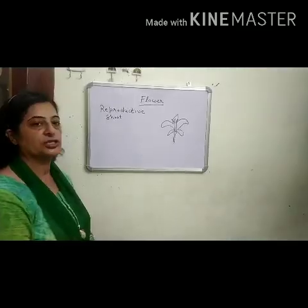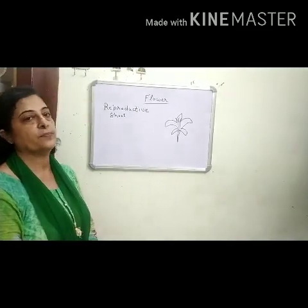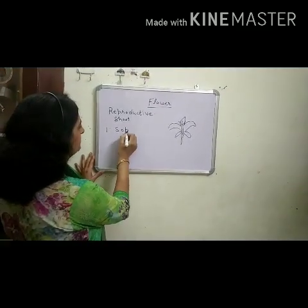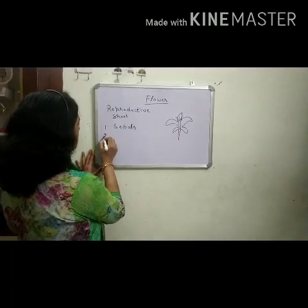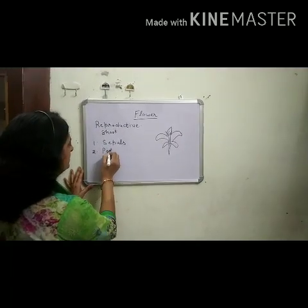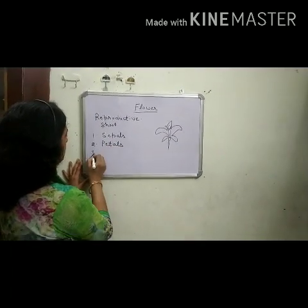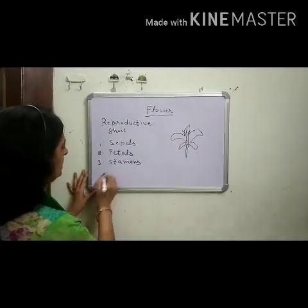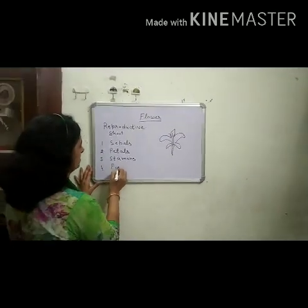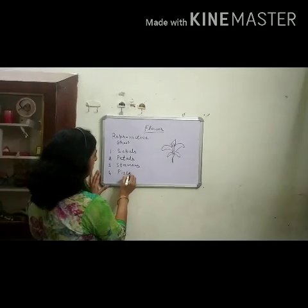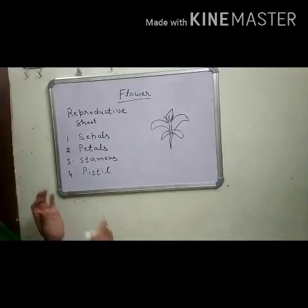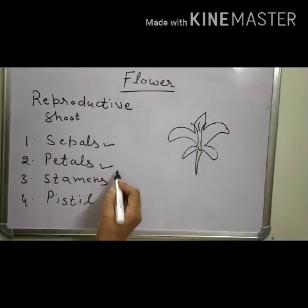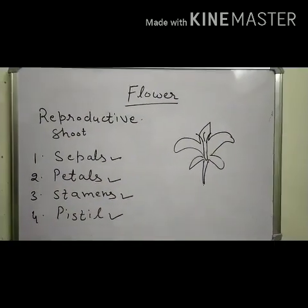There are four main parts of a flower. First is sepals. Second one, petals. Next one, stamens. And next one, pistil. So there are four main parts of a flower: sepals, petals, stamens, and pistil.